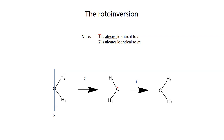We can also rotoinvert around an axis of order 2 in order to achieve the same transformation. I can show you this — it's not obvious to see where the twofold axis is. The twofold axis in this case is here, but it's an improper axis. That means if we rotate around this axis, we do not produce a molecule which is superimposable with the original one.